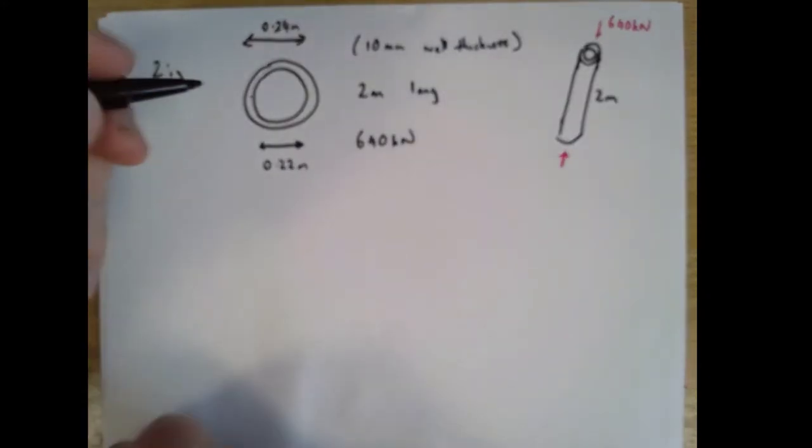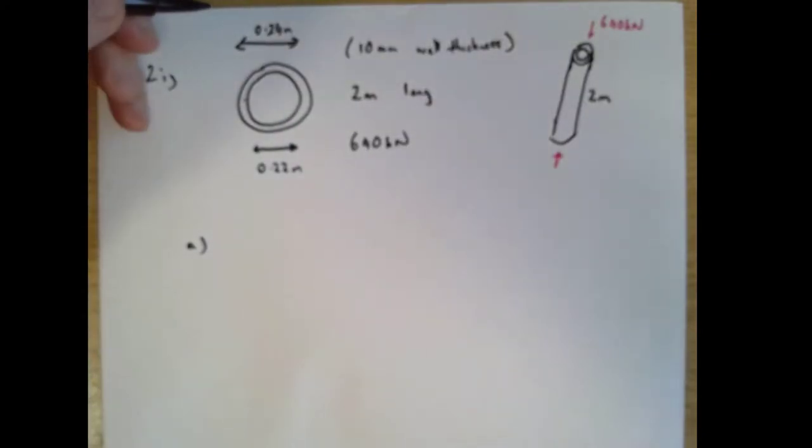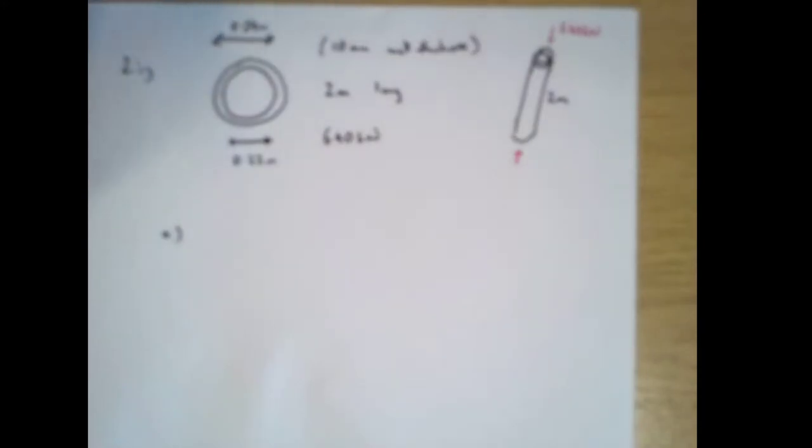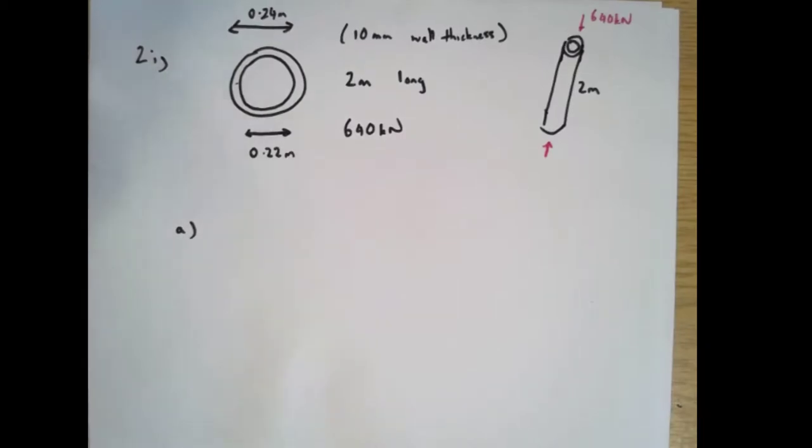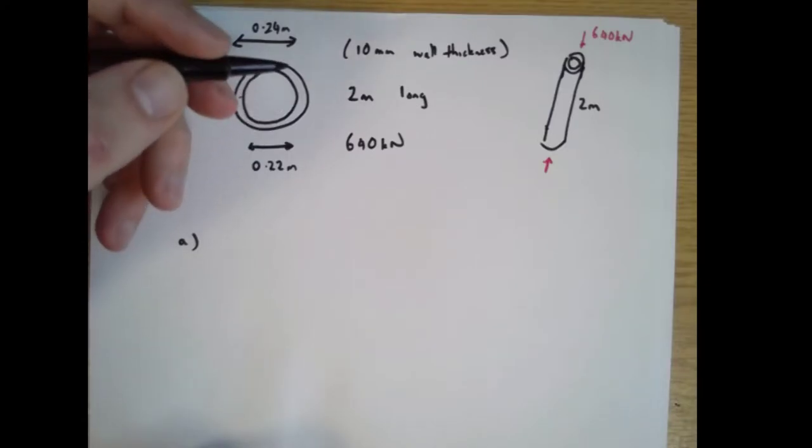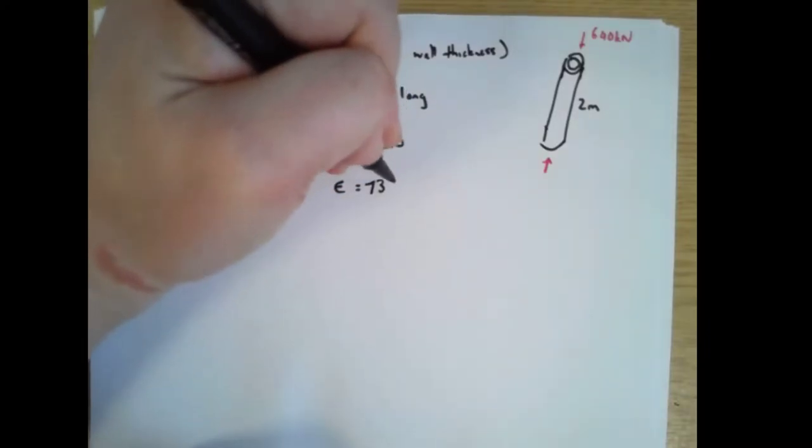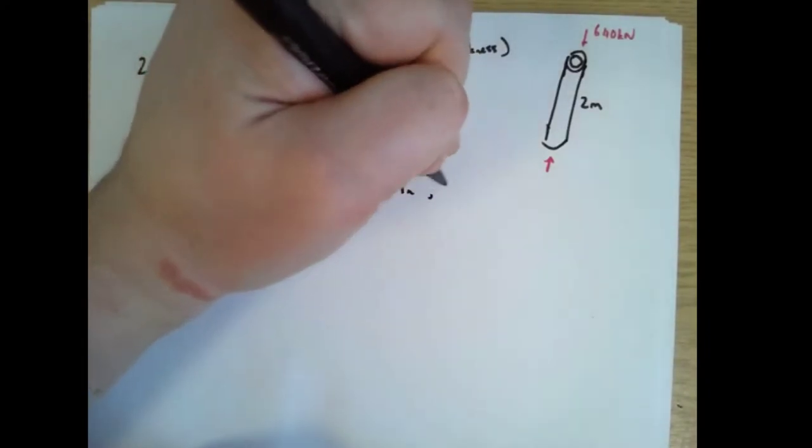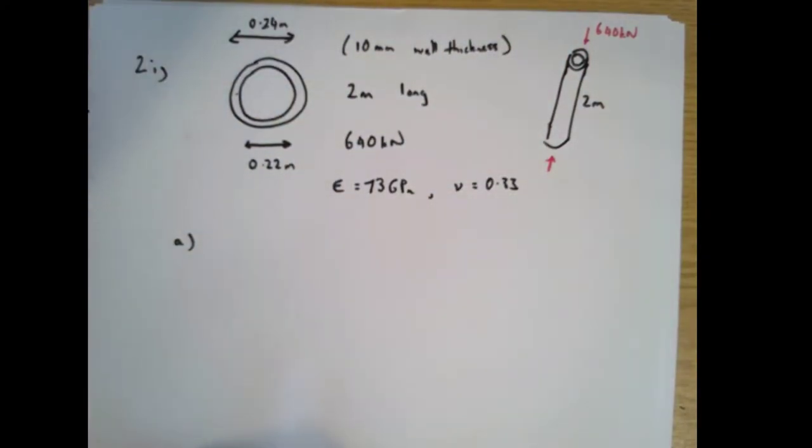I was about to say it doesn't say whether it's tension or compression, but it does, it's on the diagram. So that's acting in compression, 640 kilonewtons. And so the question says Part A, calculate the change in length of the pipe. We're told Young's modulus is 73 gigapascals and Poisson's ratio is 0.33. So we've got that information too.